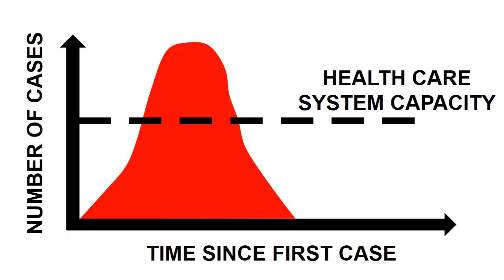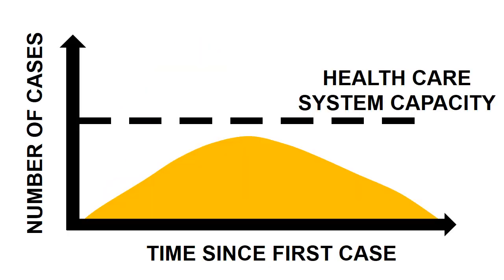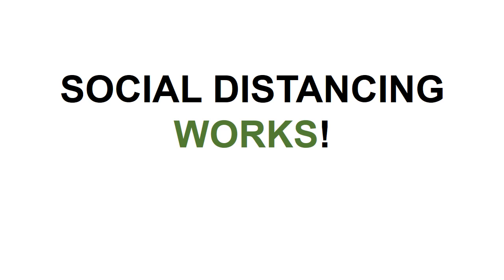The social distancing measures will slow down the spread of this virus, resulting in fewer cases, so fewer severe cases. It means that people with severe forms can have access to proper care. This is why social distancing is so important.